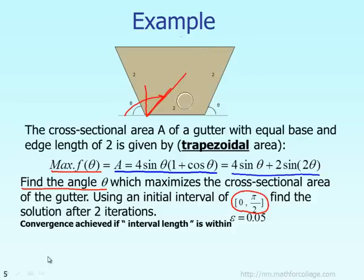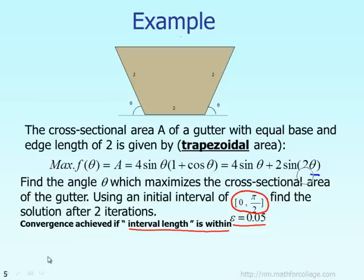Suppose you know the initial lower bound and upper bound for theta, which is between 0 and pi over 2. We want to see, using the golden section method, what happens to the answer after two iterations. If you write a computer program, you keep doing more iterations until the interval length is within a tolerance of 0.05.